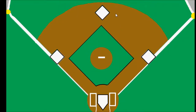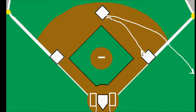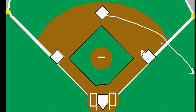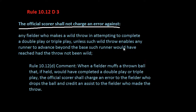This is unless the throw enables the runner to reach or advance beyond the base they would have otherwise reached. For example, if the second baseman flips to the shortstop and the shortstop throws the ball into the crowd, and instead of only reaching first base the batter advances an extra base — his advancement to first is on a fielder's choice, but his advancement to second would then be charged as an error.